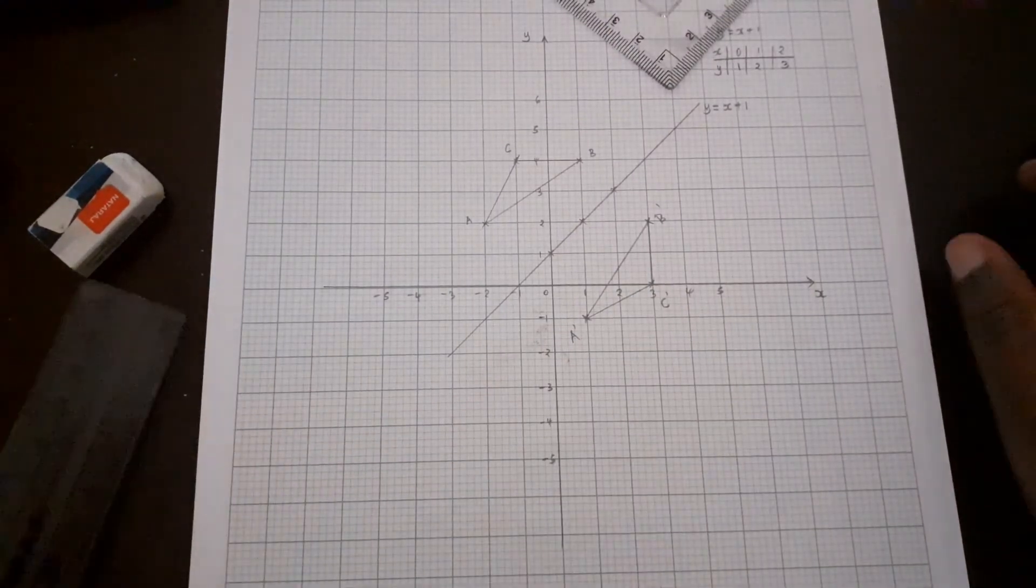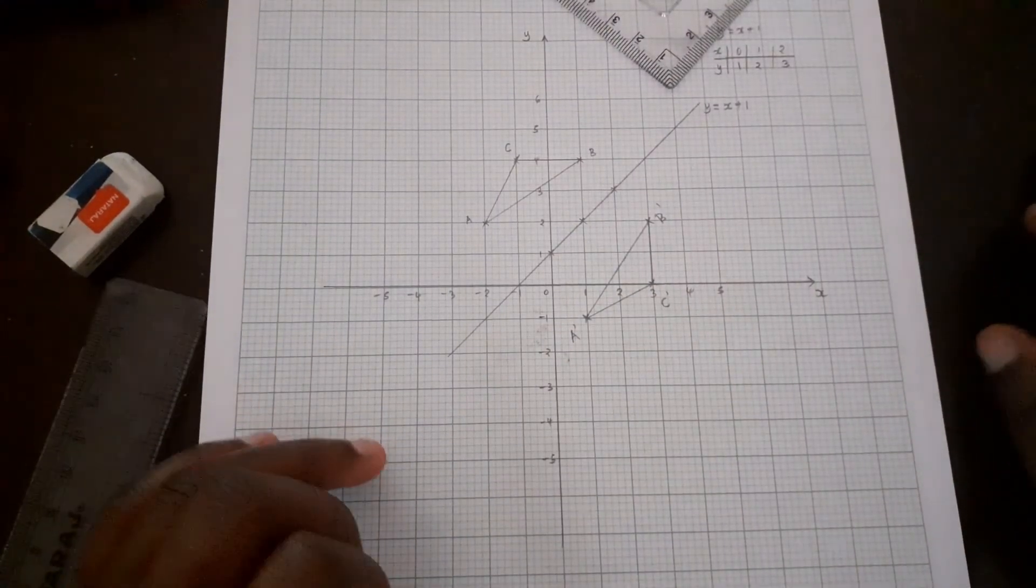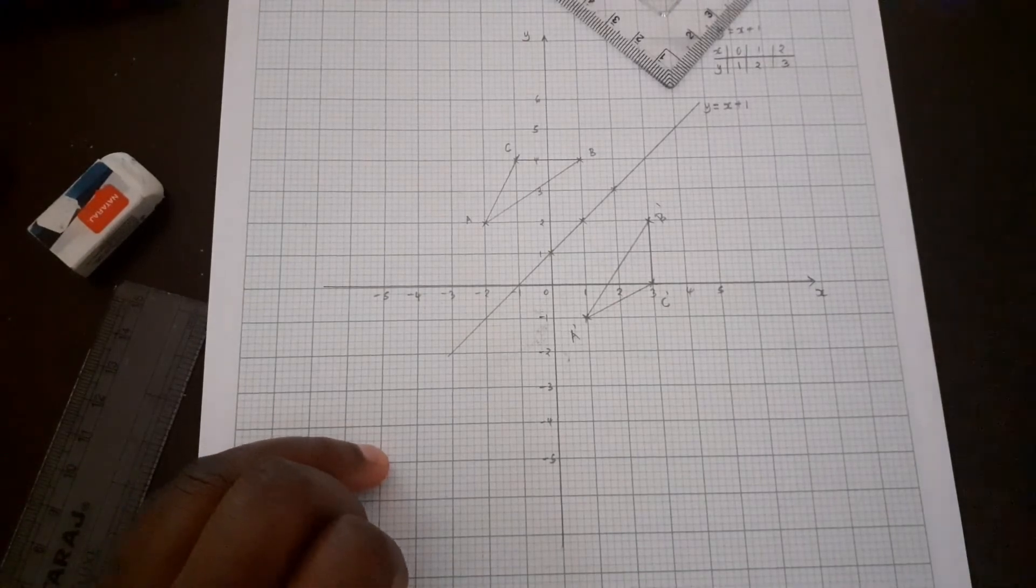And there we have the reflection of ABC on the line y equals x plus 1.